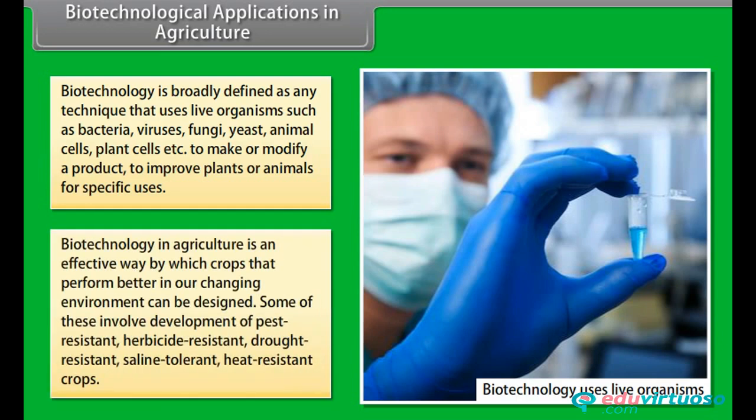Biotechnology in agriculture is an effective way by which crops that perform better in a changing environment can be designed. Some of these involve development of pest resistant, herbicide resistant, drought resistant, saline tolerant, and heat resistant crops.